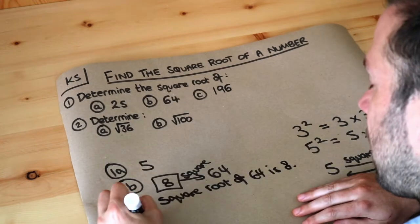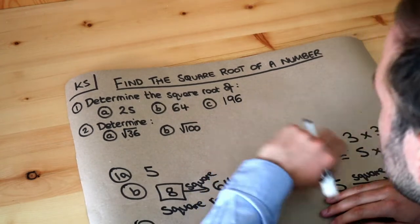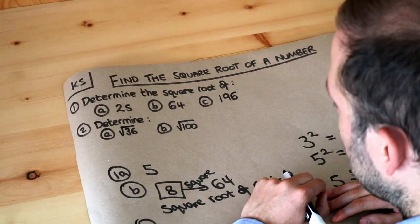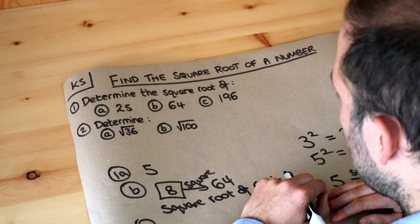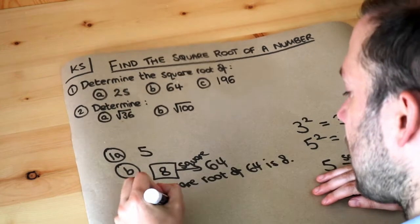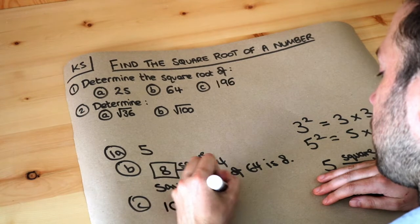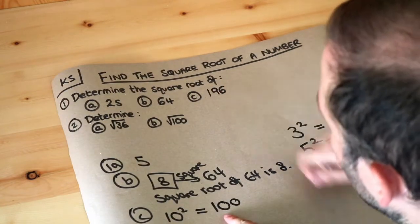And what about C? We need to think what number squared gives you 196. Now this one's a bit harder. Well let's think, if we had 10 squared, that gives you 100, that's too small, we need 196.